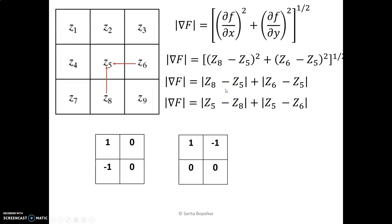So we are taking the magnitude. As it is a magnitude, we can exchange the position — it does not matter. So z5 minus z8, z5 minus z6. From that, we obtain the mask. z5 has coefficient 1, z8 has coefficient minus 1. The coefficients are 1 minus 1 and 1 minus 1. This is the first derivative we are obtaining.